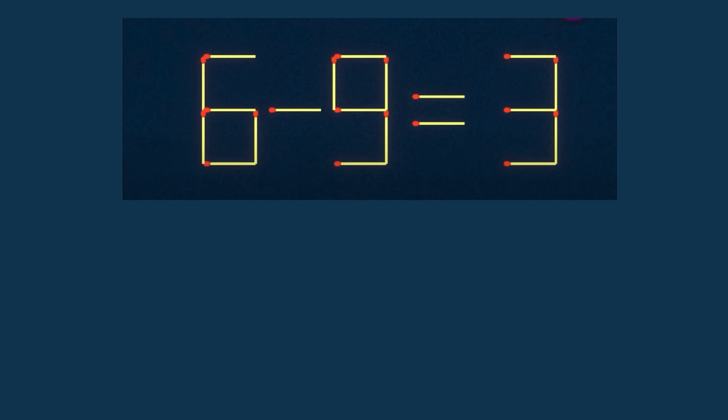Next one: 6 minus 6 is 3. What if we make 9 into 5? So this is now 5, and we make 6 into 8 by putting the stick here. Now it is 8 minus 5 equals 3.